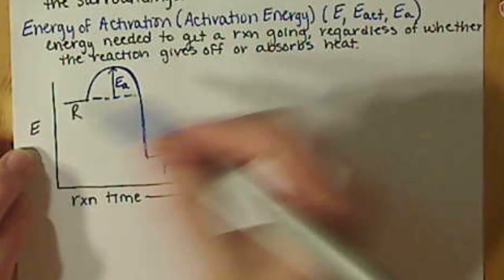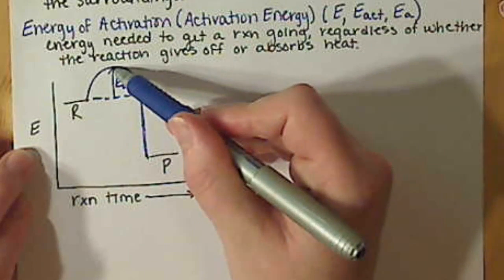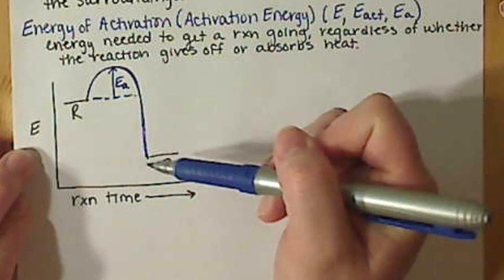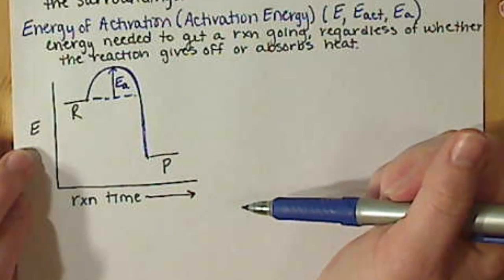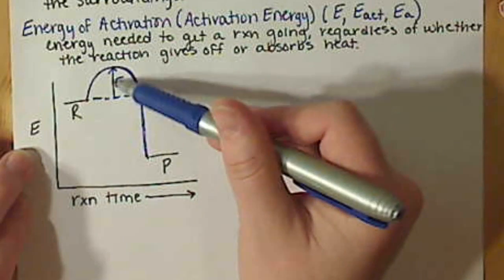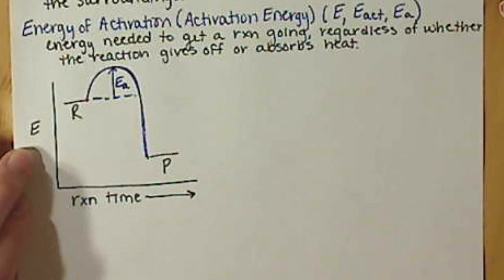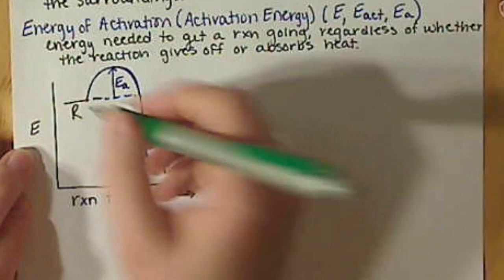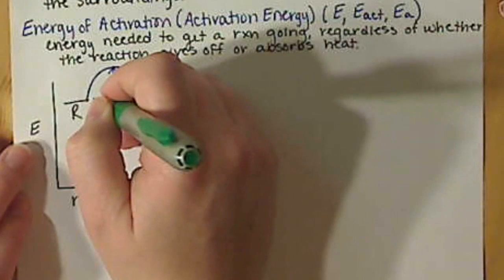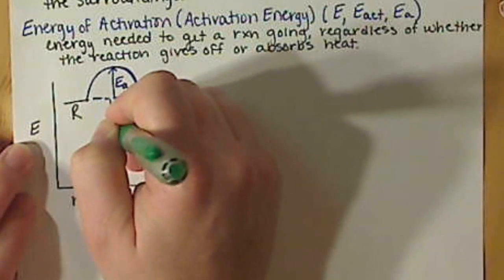If we don't have this amount of energy to get to the top of this hill, this reaction is never going to happen. So we have to add this energy, even though overall our reaction is going to give off energy.